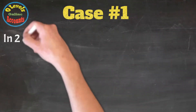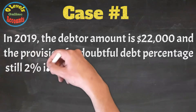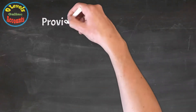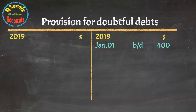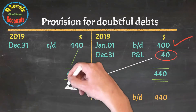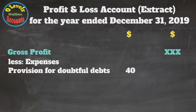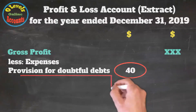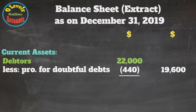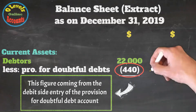Now we have case number one. The value of debtors increased to $22,000 but the provision percentage is still 2%, so the new provision value would be $440. We have an opening balance of $400 and the new provision for 2019 is $440. We will record only the increase of $40 this year, giving a total provision of $440 at year end. In the profit and loss account extract, $40 appears from the credit side entry of the provision account. In the balance sheet extract, the provision for doubtful debts appears under debtors with $440 — the accumulated figure from the closing balance.